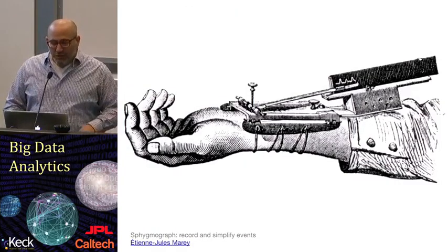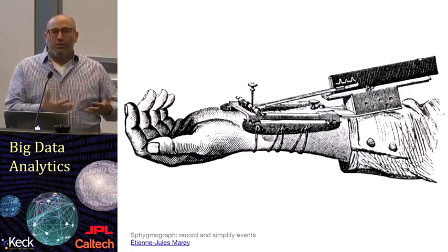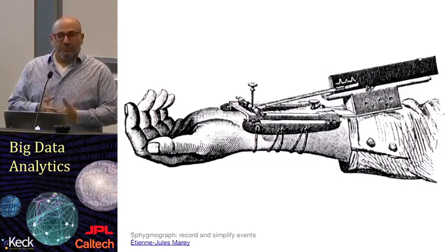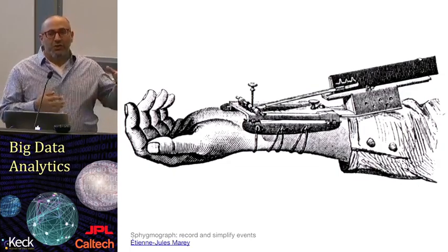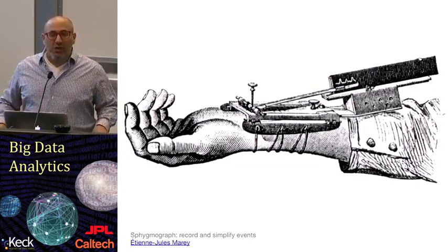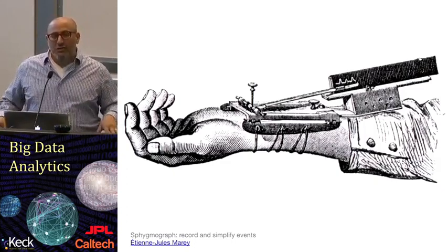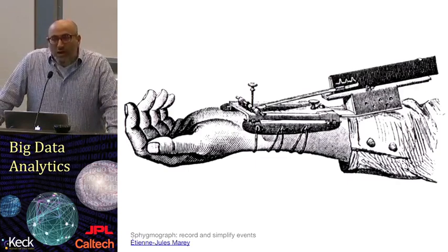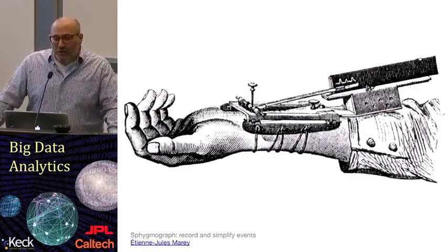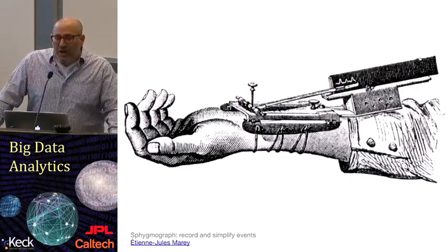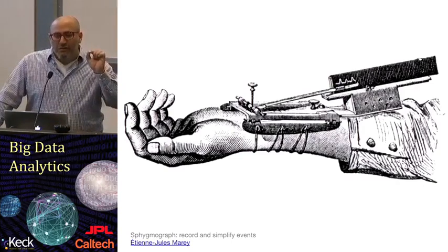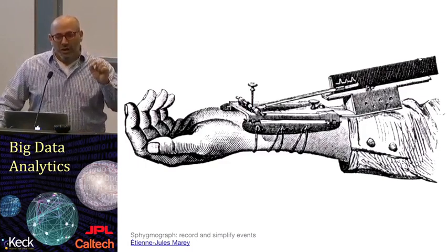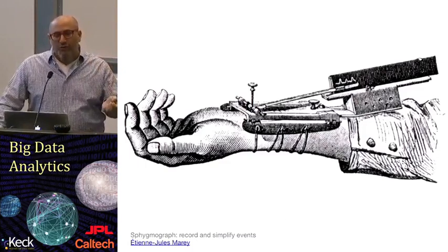Another reason is for us to be able to capture events as they happen in a way that's not otherwise available. If you look at this particular image, this is actually taken by a physician from the 19th century named Etienne Marey. And Marey actually figured out with this device how to create a visible marker of the pulse of a human being by capturing the force in the veins.